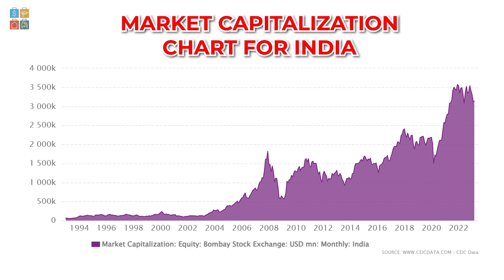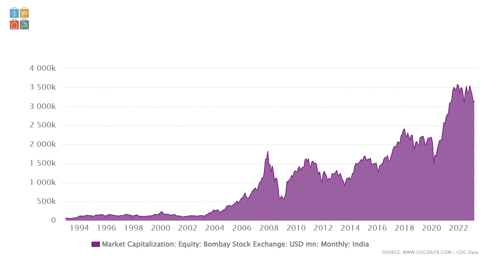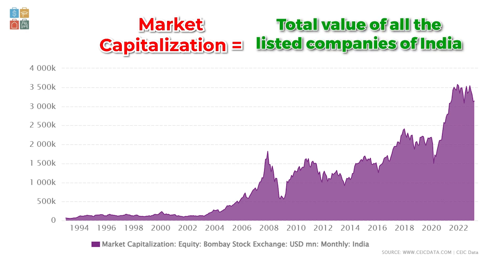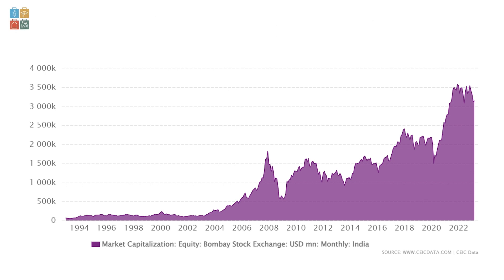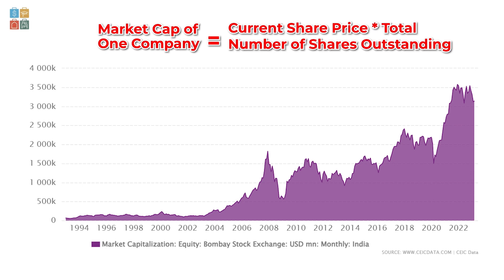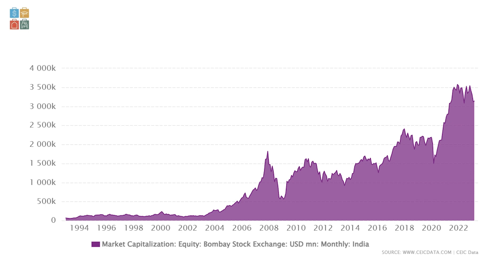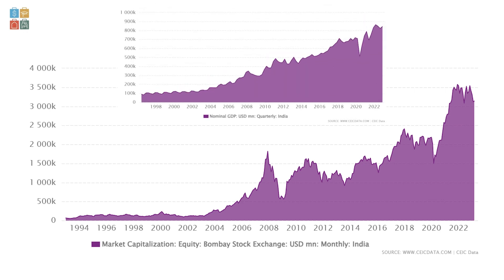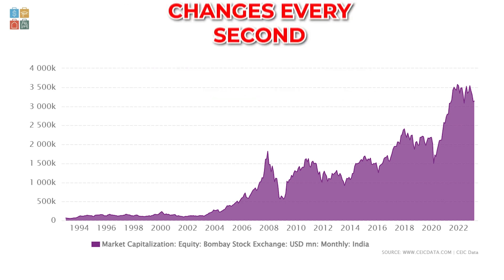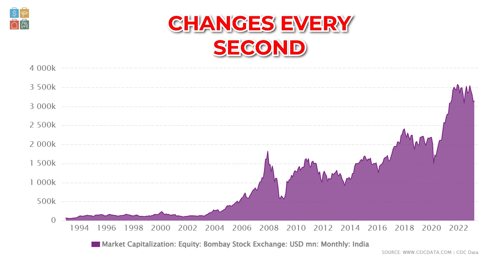Now let's see how the stock markets can replicate this. I have another chart, which is the market capitalization chart for India. Market capitalization is basically the total value of all listed companies in India — you multiply the current stock price of a share of a company along with its outstanding shares to get that company's market capitalization, and together they give you the total market cap of the entire stock market of India. You can see the trajectory of this chart is quite similar to the GDP chart — but it changes every second because the formula multiplies by the current value of stock prices.